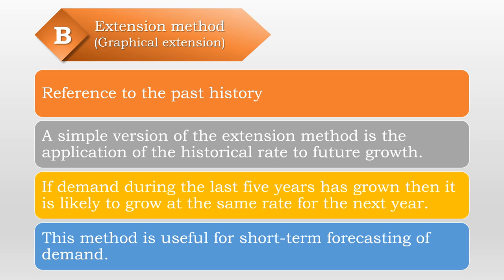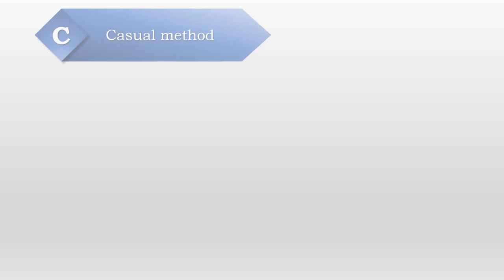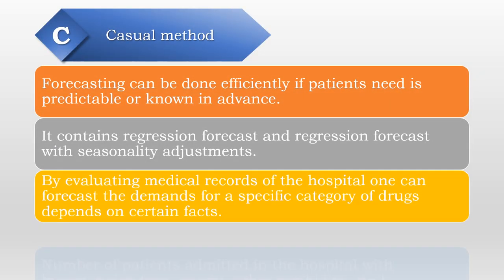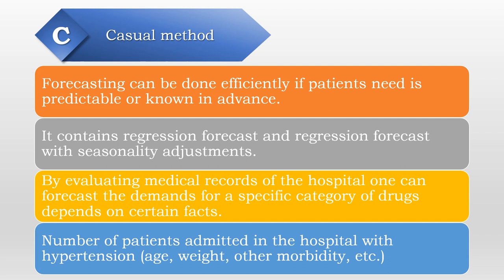The casual method can be applied efficiently when a patient's needs are predictable or known in advance. It includes regression forecasting and regression forecasting with seasonality adjustment. By evaluating medical records of the hospital, one can forecast demand for a specific category of drugs. For example, by considering the number of patients admitted with hypertension along with their age, weight, and other morbidity factors, one can predict the number of drugs needed in coming years using regression analysis. This method is useful for forecasting one to two years ahead.